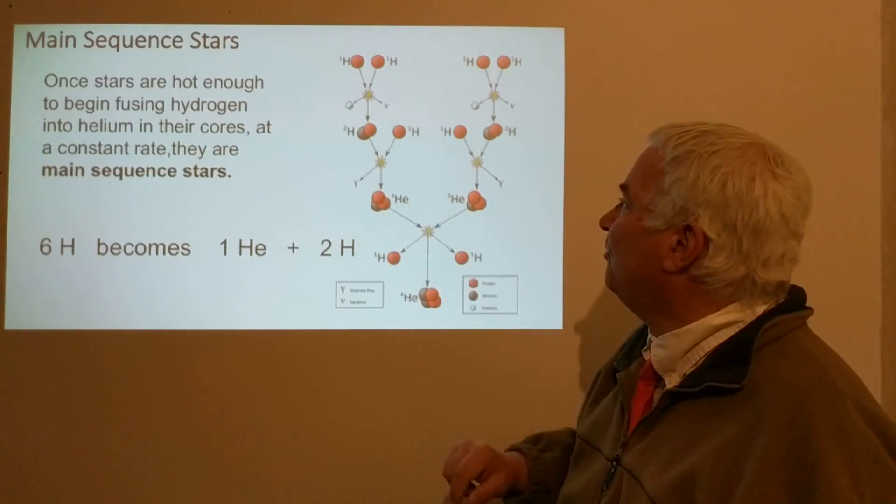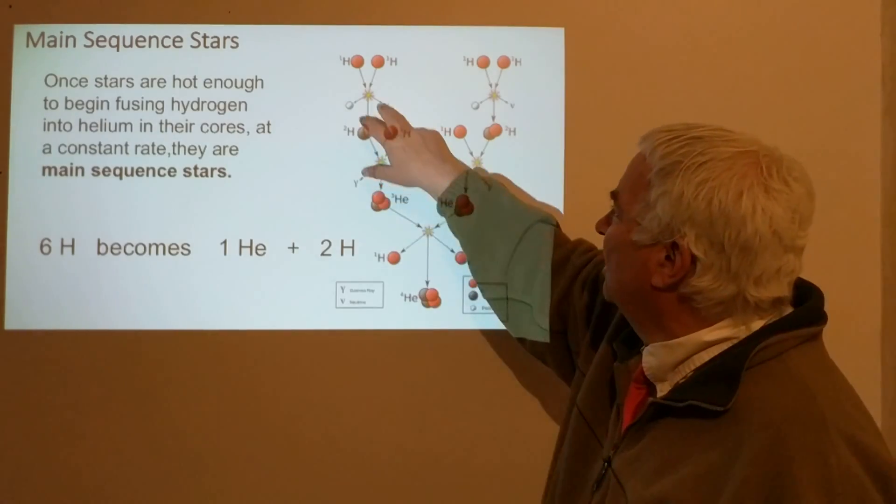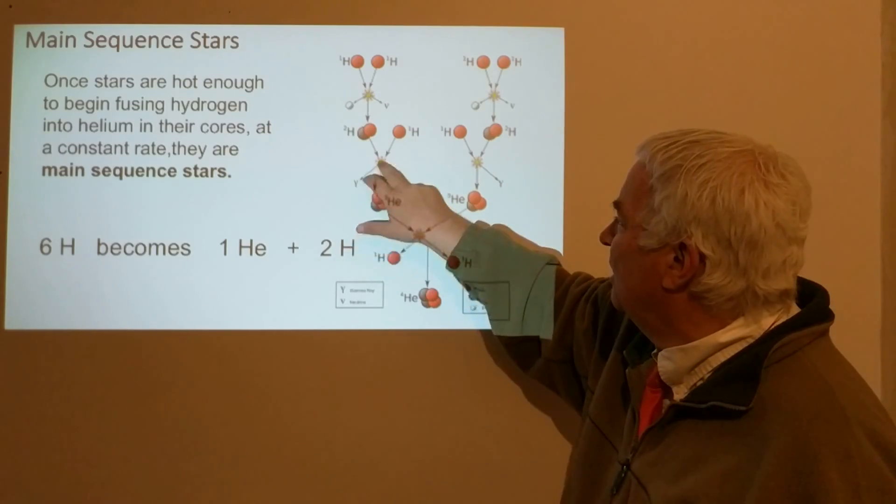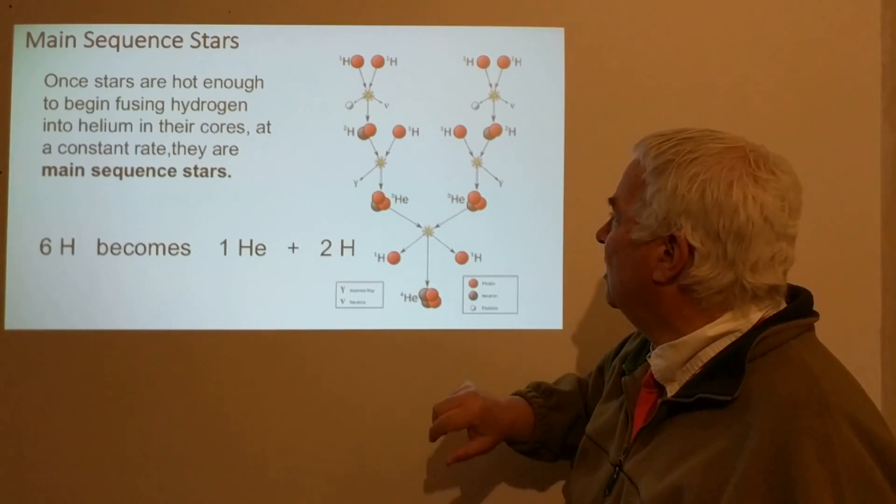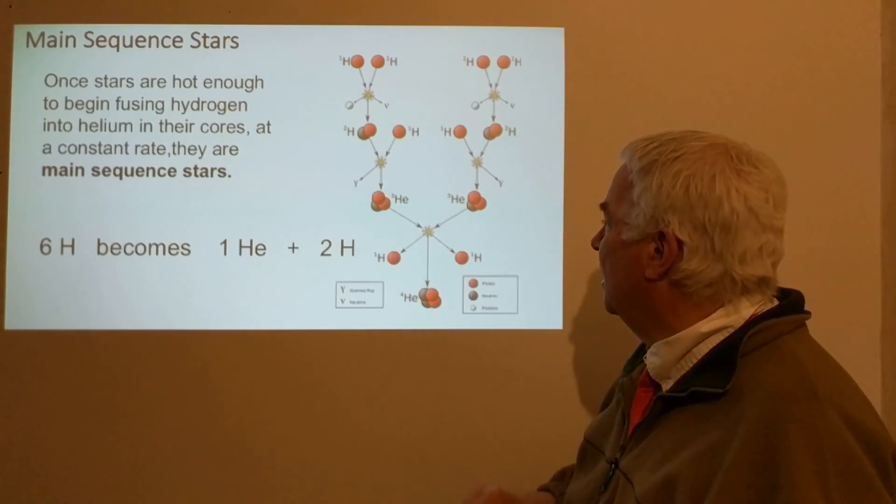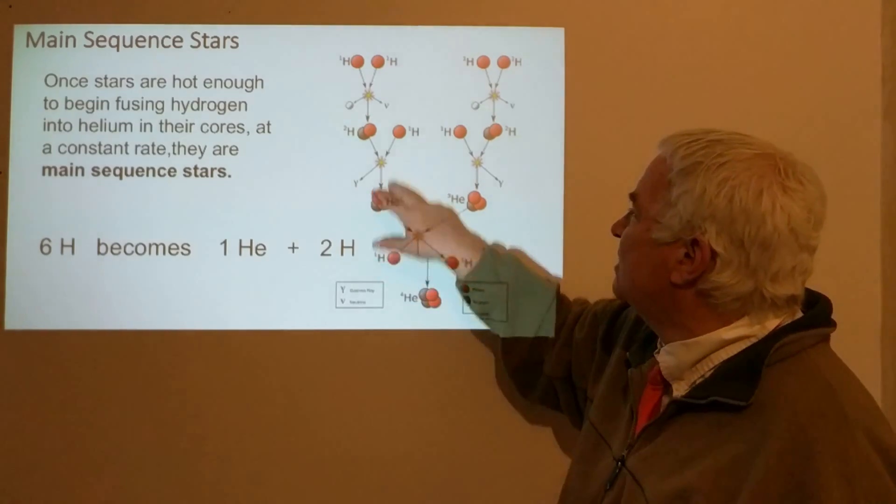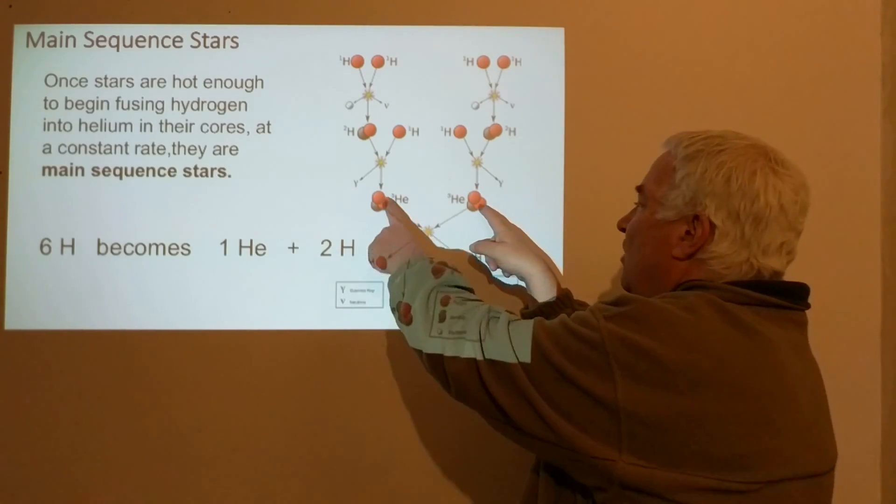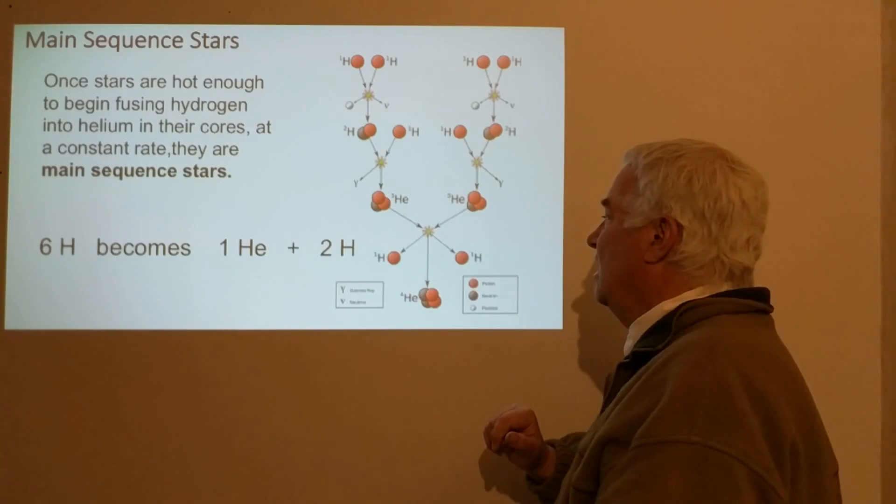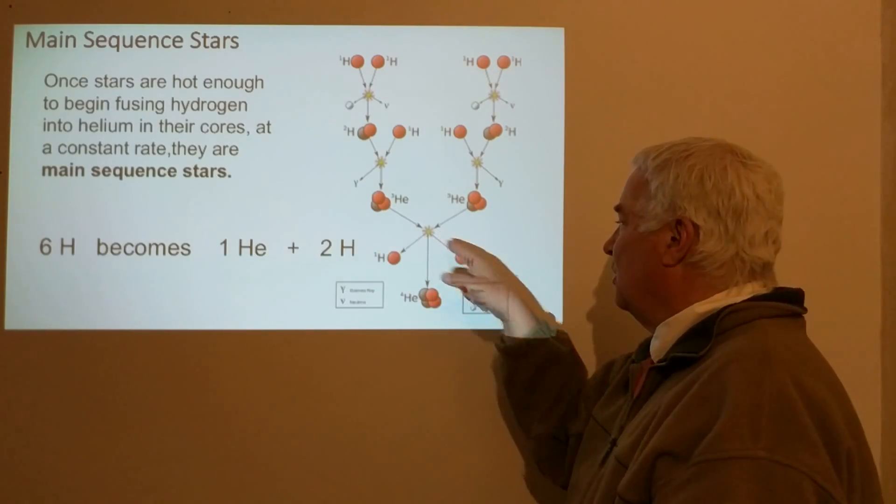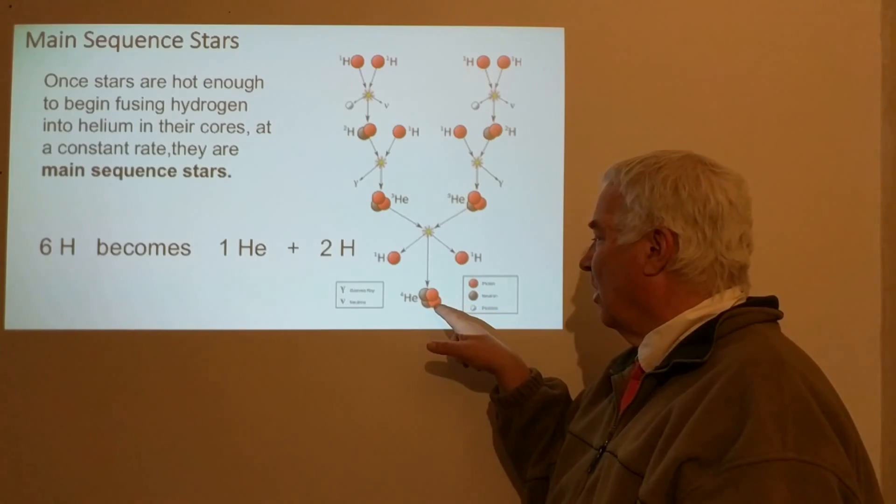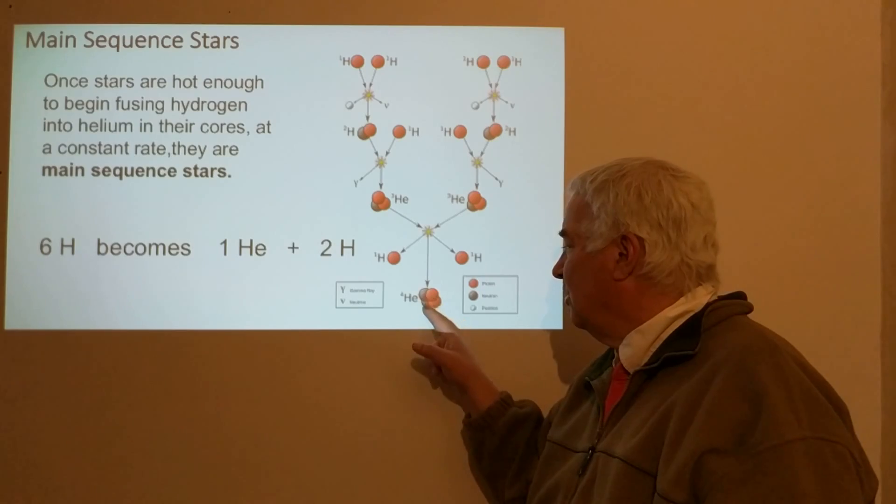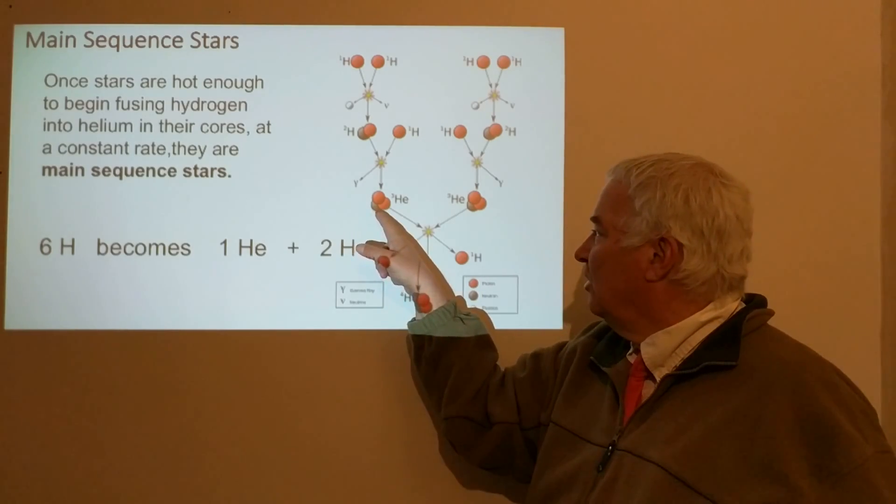Forming a gamma ray—actually in this stage there's no light formed, the light is formed in the earlier stage—and then a helium-3 nucleus is formed. Once this happens twice in the core of the Sun, then these two would interact and produce a helium-4 nucleus.